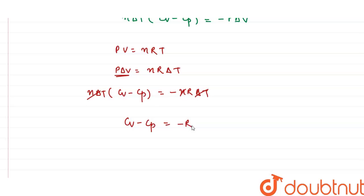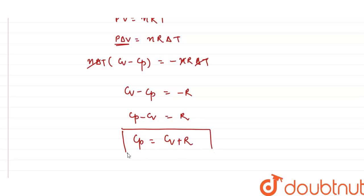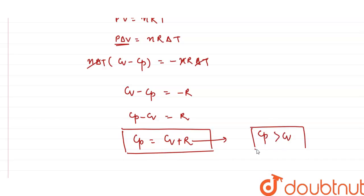Reversing the sign: Cp − Cv = R, or Cp = Cv + R. Since R is the universal gas constant with a positive value, this means Cp is always greater than Cv.